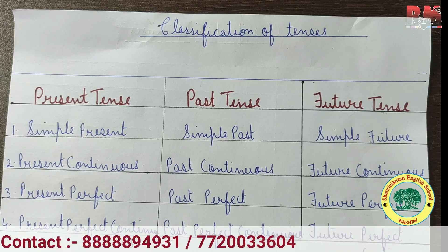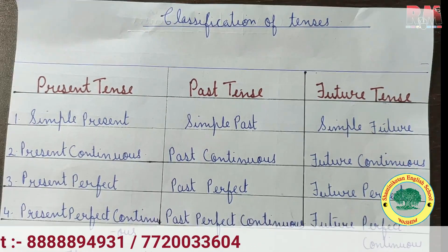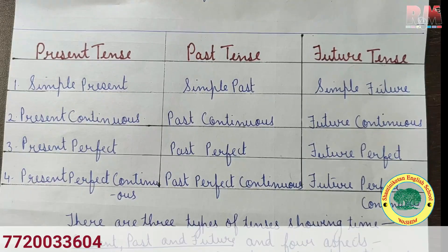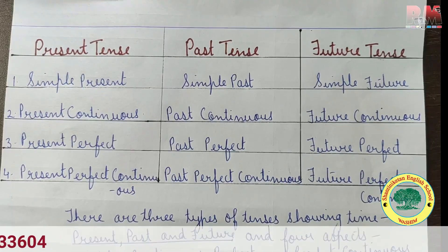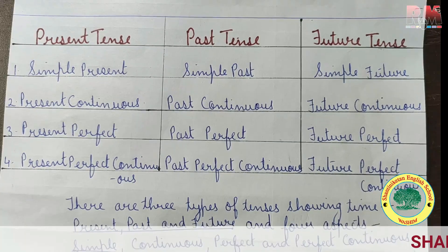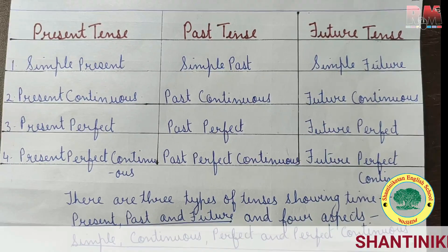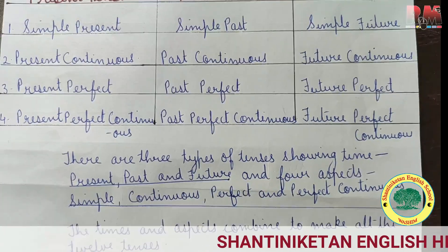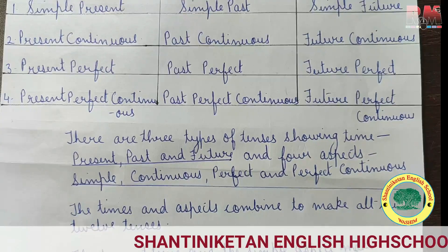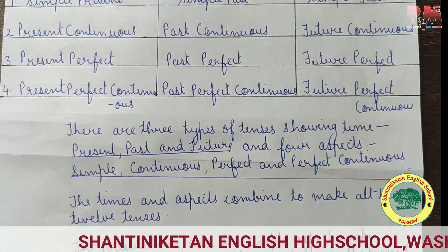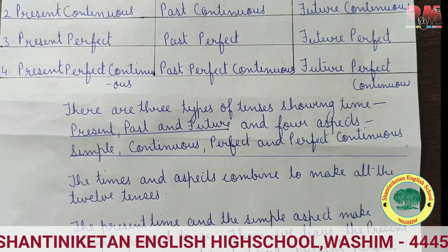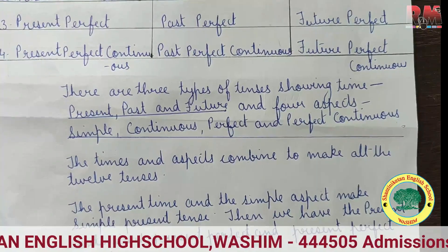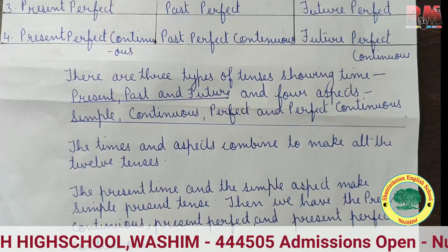There are three types of tenses showing time: present, past, and future, and four aspects: simple, continuous, perfect, and perfect continuous. The time and aspects combine to make all 12 tenses. The present time and the simple aspect make simple present tense, then we have present continuous, present perfect, and present perfect continuous. In the same way, past and future tenses are formed.